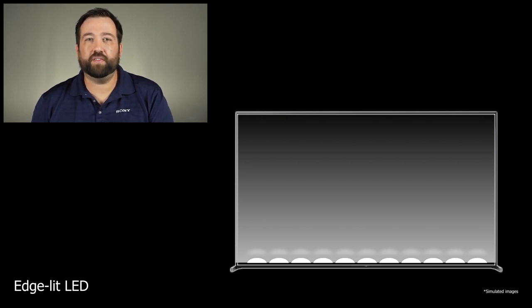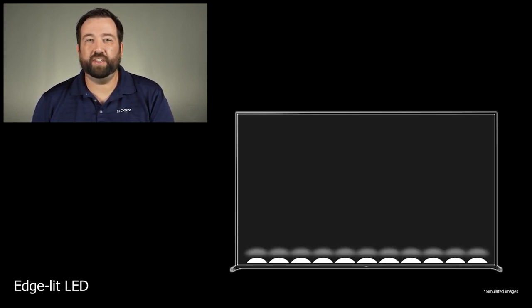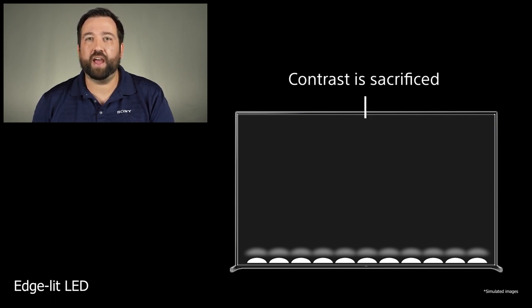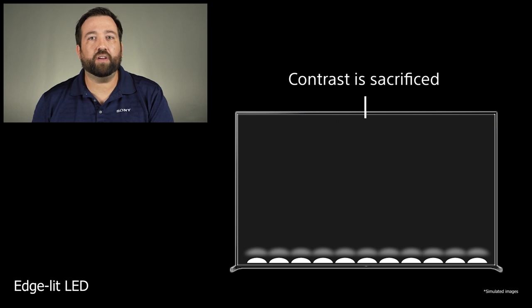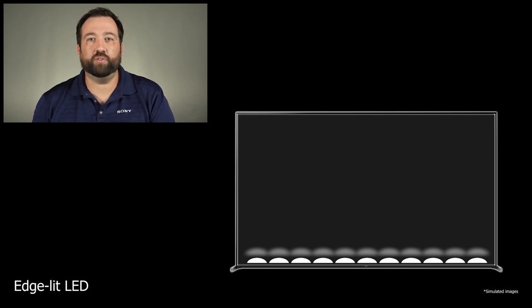Each of these columns is independently controlled. With this structure, black levels may be darker in some areas, but the downside of edge lighting is its uniformity. Because the lighting columns are so large, it's difficult to illuminate individual objects on the screen.